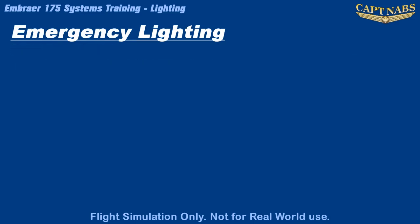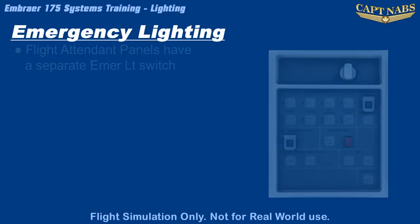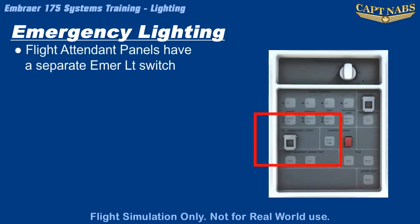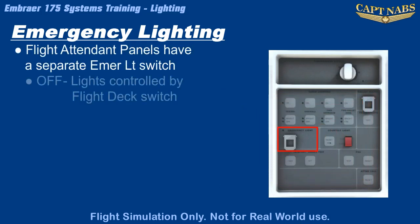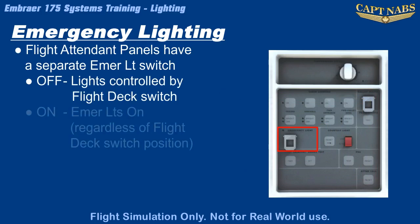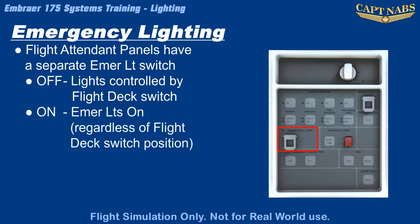Additional switches for the emergency lights are provided on each flight attendant panel. These are two-position switches. In the off-arm position, the lights will be either off or armed depending upon the position of the flight deck switch. The on position will override the flight deck switch and turn on all the emergency lights.